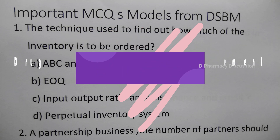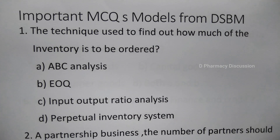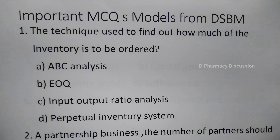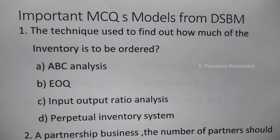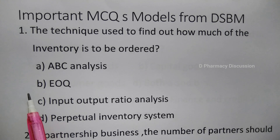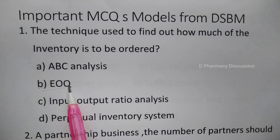Question 1: The technique used to find out how much of the inventory is to be ordered. Option A is ABC analysis, B is EOQ, C is input-output ratio analysis, and D is perpetual inventory system. The correct answer is option B, EOQ, that is Economic Order Quantity.